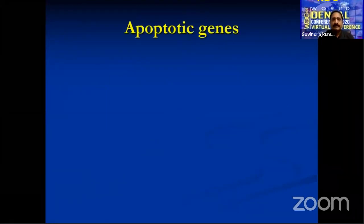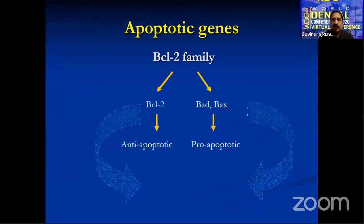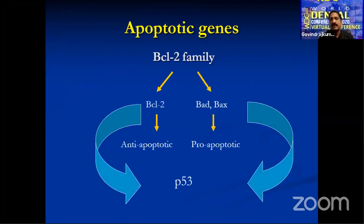The BCL-2 family has two components: BCL-2, which is anti-apoptotic and inhibits apoptosis, and BAX/BAD, which are pro-apoptotic. Both are under the control of p53. In the majority of cancers — oral squamous cell carcinoma and other carcinomas — p53 is mutated. Once p53 is mutated, it will not function, and BCL-2 family members will also not function properly because p53 controls so many downstream genes.